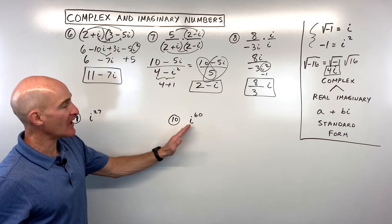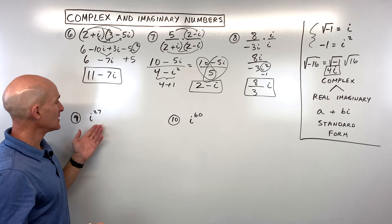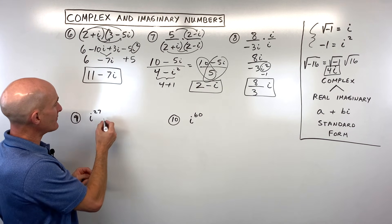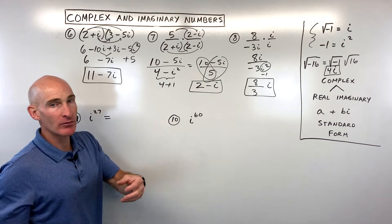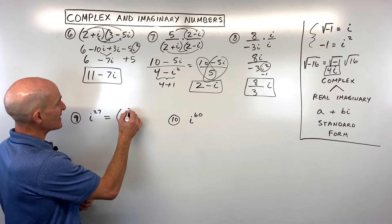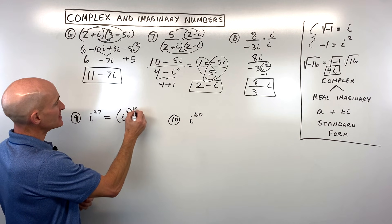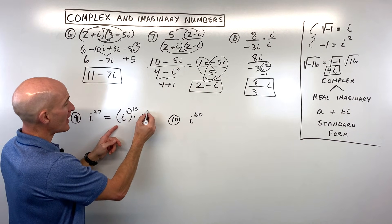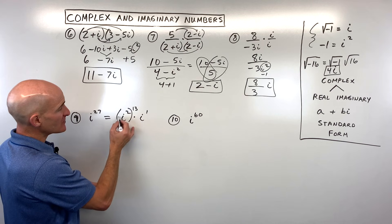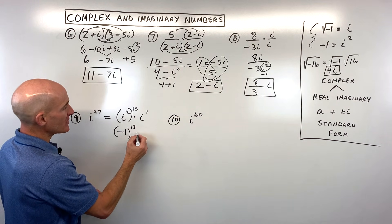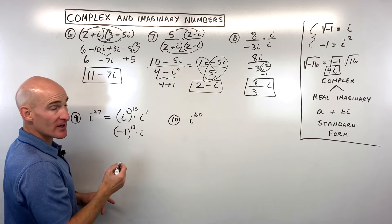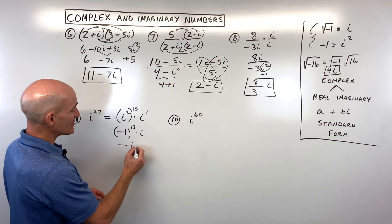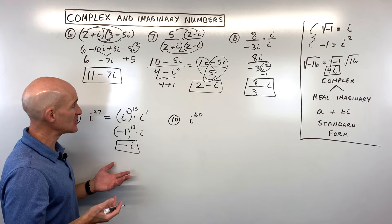For examples nine and ten, this is i to a higher power. For i to the 27th, I like to divide out groups of two. Write it as i squared to the 13th power times i to the first — because two times thirteen is twenty-six, and we need one more i. Since i squared is negative one, we have negative one to the 13th power times i. A negative number to an odd power is negative, so this gives us negative i.